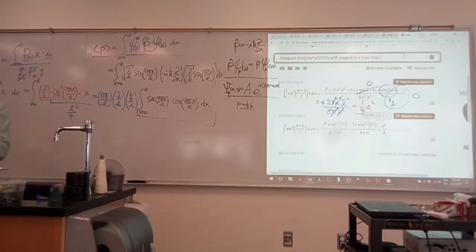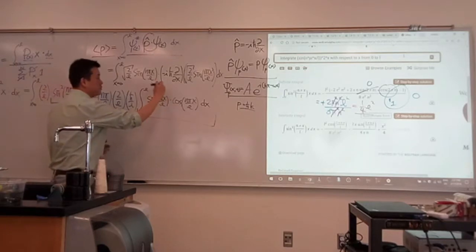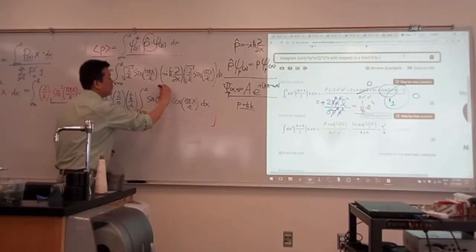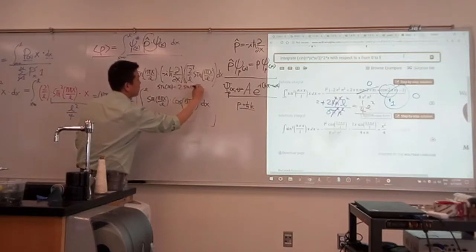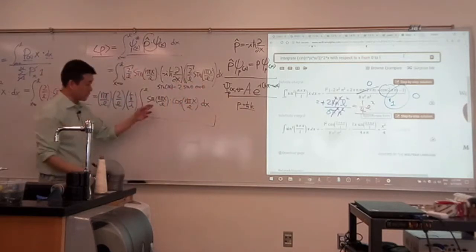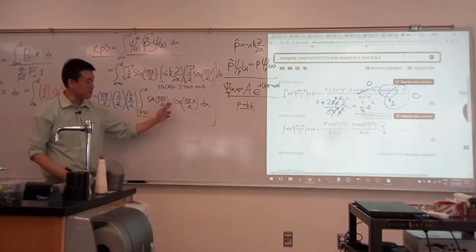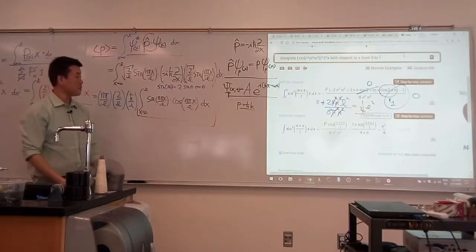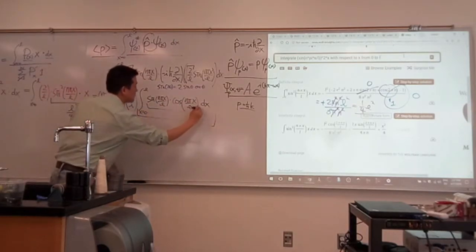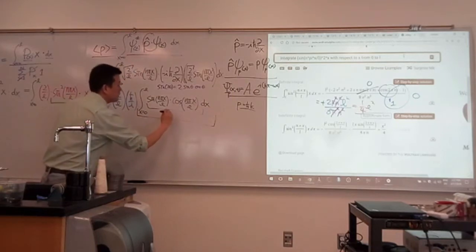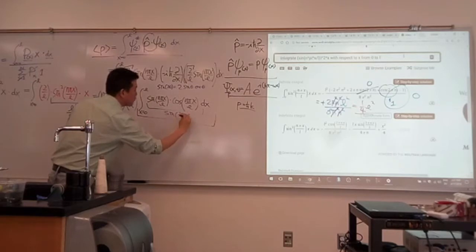Yeah, you use double angle formula. That'll quickly tell you what it is. So this is the formula I'm using: sine of 2 theta is equal to 2 sine of theta cosine of theta. Because that's what I'm seeing here, sine of angle times cosine of angle.